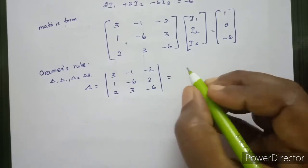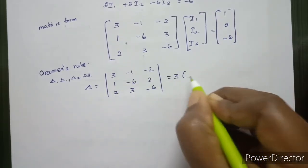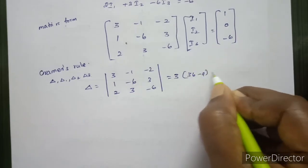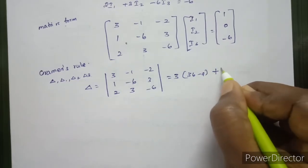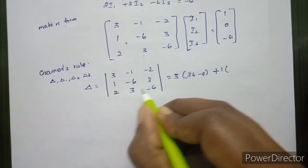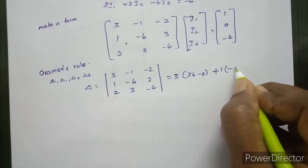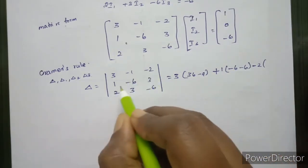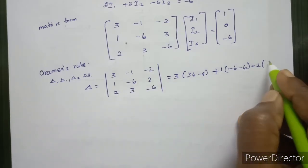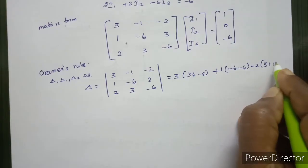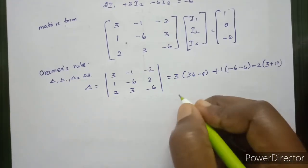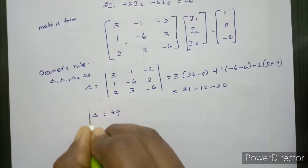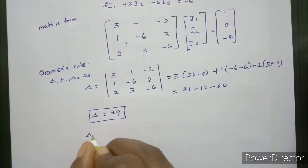To find the determinant value, we expand along the first row. 3 into the 2x2 submatrix: (-6)(-6) minus (3)(3) = 36 minus 9. Then minus (-1) into [(1)(-6) minus (3)(-2)] = 1 into (-6 + 6) = 0. Then minus 2 into [(1)(3) minus (-6)(-2)]. Simplifying: 81 minus 12 minus 30 gives delta equal to 39.